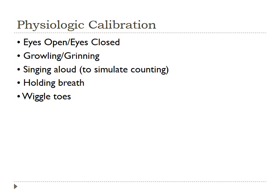Your physiological calibration is going to be done with pediatrics just like you would with adults. However, you might need to make some modifications. You can instruct the same eyes open and eyes closed based on the child's age, if they can follow those kinds of commands. But you might have the child growl or grin to see the chin EMG, or have the patient sing aloud to simulate counting. You can ask them to hold their breath or wiggle their toes — it's brought down to the child's level and made into a game for them, unlike adults where you just tell them what to do.